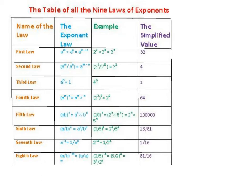These are the laws of exponents, which means they're the rules we have to follow when we are working with exponents — whether we're multiplying, adding, subtracting, dividing, or just trying to simplify the problem. When two numbers are being multiplied with the same base, you add the exponents to simplify. For example, you would add 2 plus 3.